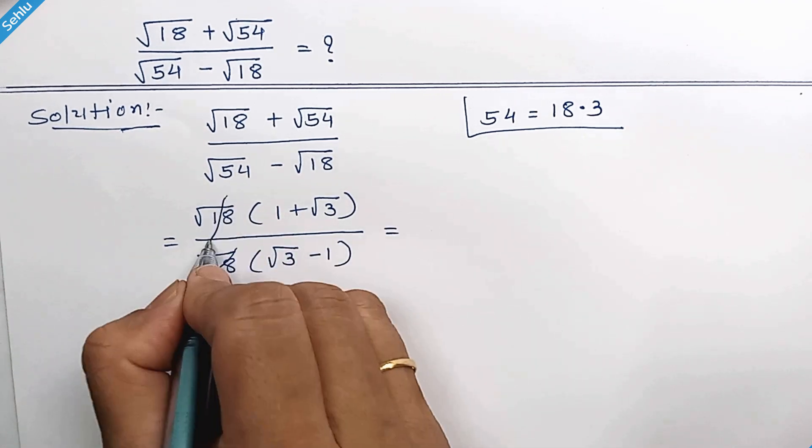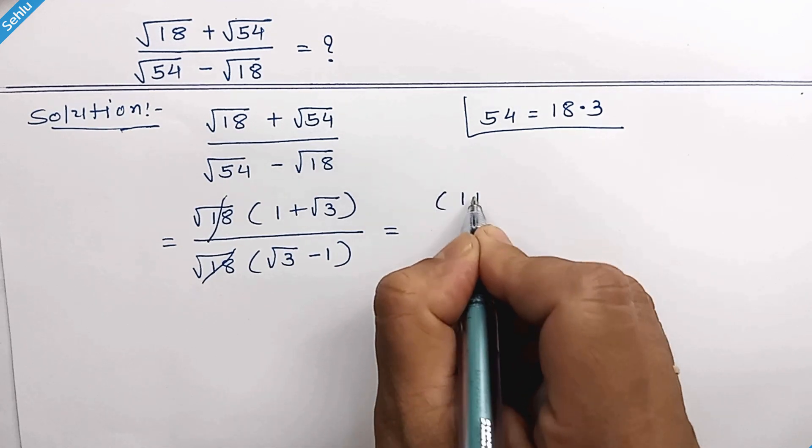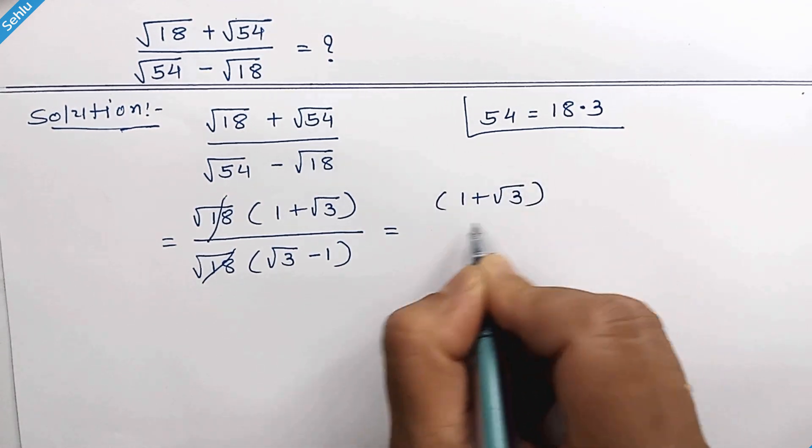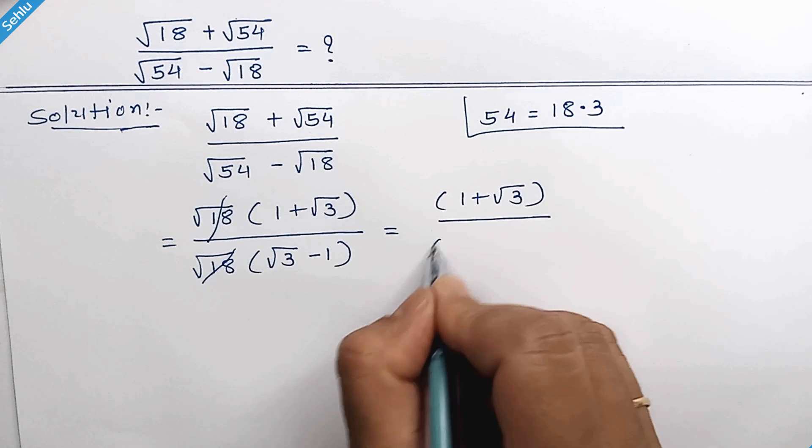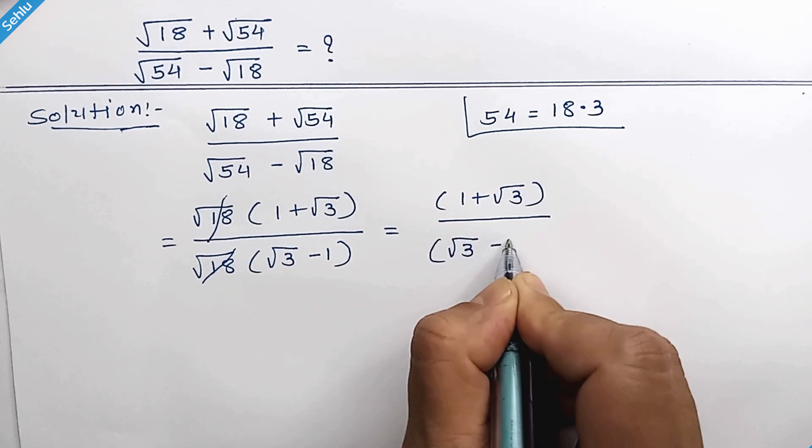So the two gets cancelled out. Now we have 1 plus square root of 3, over square root of 3 minus 1.